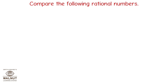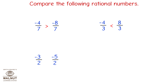Compare the following rational numbers. Minus 4 upon 7 is greater than minus 8 upon 7. Minus 4 upon 3 is smaller than 8 upon 3. Minus 3 upon 2 is greater than minus 5 upon 2. 9 upon 1 is greater than minus 8 upon 1.